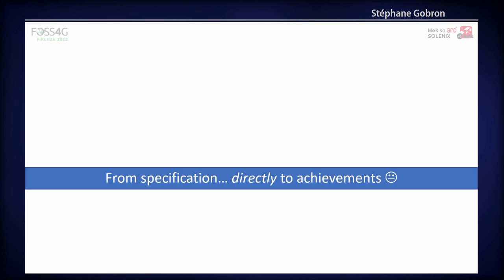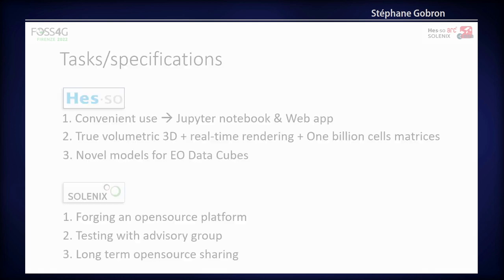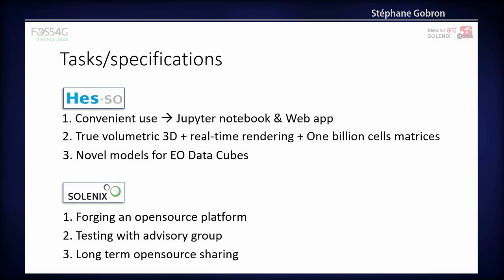There are quite a lot of things we did — around 16 models developed — and I will show the specification and jump directly to the achievements. Our university was responsible for the models, Jupyter notebook applications, true volumetric renderings, and all 16 novel models for Earth observation data cubes. Solenix made the link with field testers, ensured continuous feedback so we could adjust our programming, and handled the open-source sharing of the whole project.